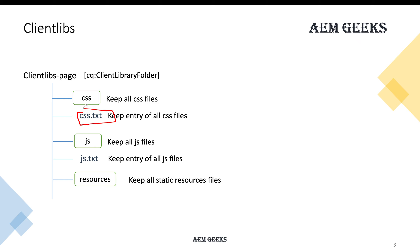From AEM 6.4 onwards, you should have one more folder called 'resources' — this folder name must be exactly 'resources'. The purpose of this folder is to hold any static files like font files, images, or logos that you use in your CSS. Those files should always be under your resources folder. If you don't have them under resources, those will not load.